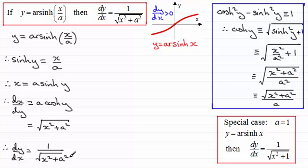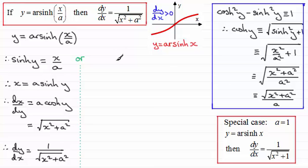Now, that's not the only way that we could do it — we could also do it by implicit differentiation. So we'll border this off and show the other way. If we're doing implicit differentiation, I want to state that I'm differentiating the function sinh y equals x over a with respect to x.